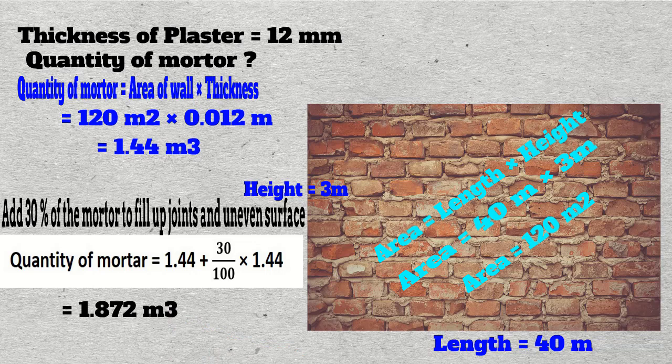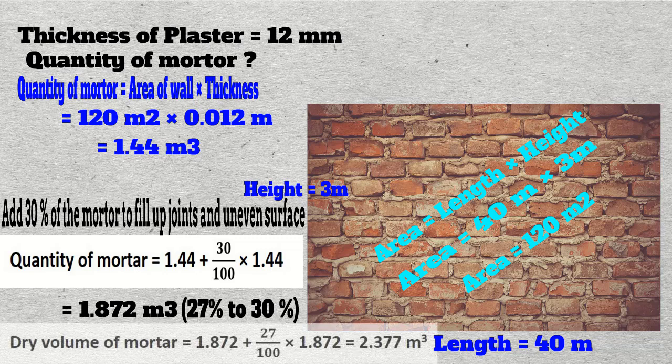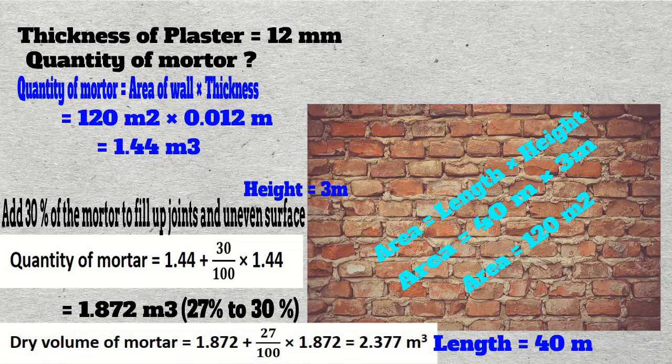But in field, the supply is in the form of dry material, so we need to change the wet quantity of the mortar to dry. Usually, we take 27% to 30% of the wet quantity in order to get the dry quantity. Let's take 27% of the wet quantity to find out the dry volume. Increasing 27% of the dry volume: 1.872 is the wet quantity plus 27 divided by 100 multiplied by 1.872. By calculation, we get the dry volume is equal to 2.377 cubic meters of mortar.